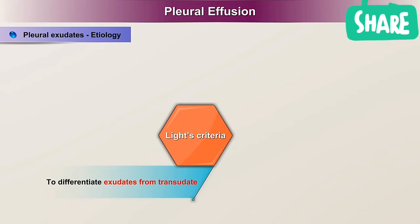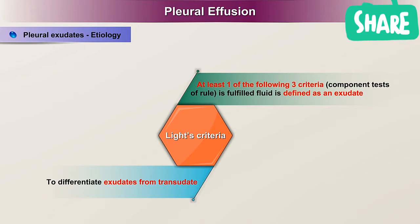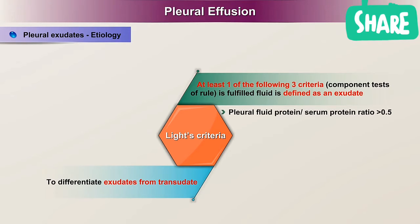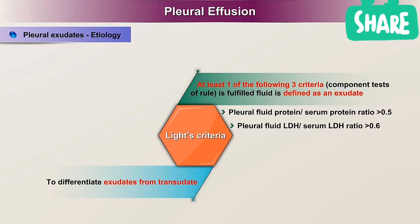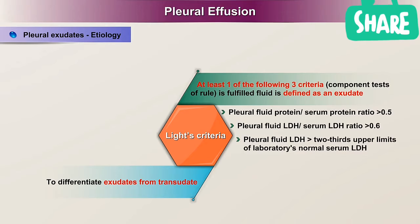Light's criteria to differentiate exudates from transudates: according to the traditional Light's criteria rule, if at least one of the following three criteria is fulfilled, the fluid is defined as an exudate. Pleural fluid protein to serum protein ratio greater than 0.5, or pleural fluid LDH to serum LDH ratio greater than 0.6, or pleural fluid LDH greater than two-thirds the upper limits of the laboratory's normal serum LDH.